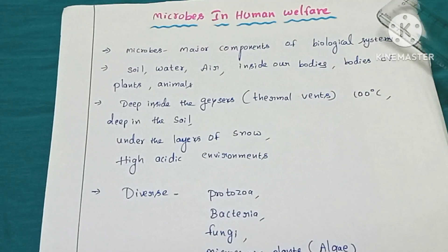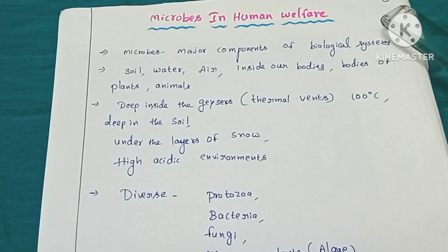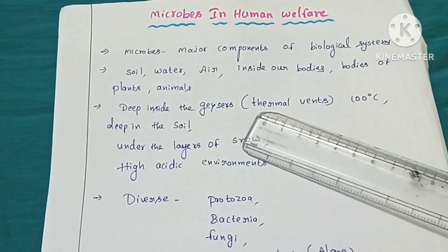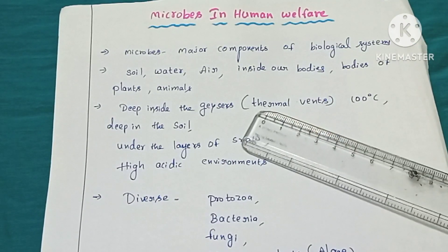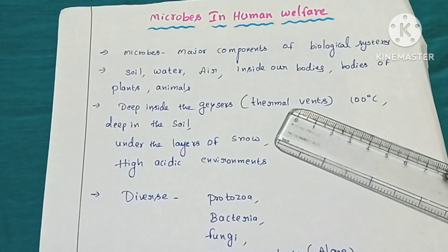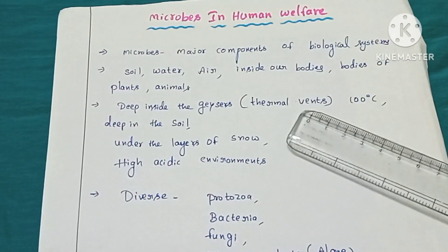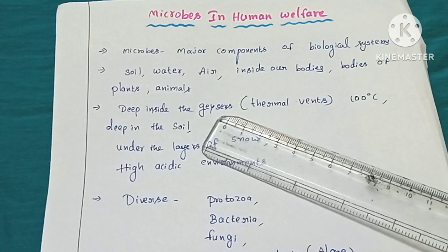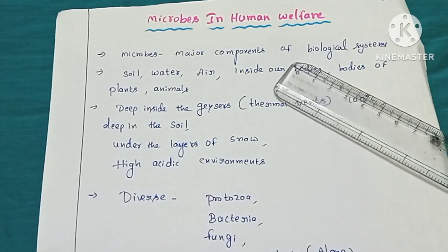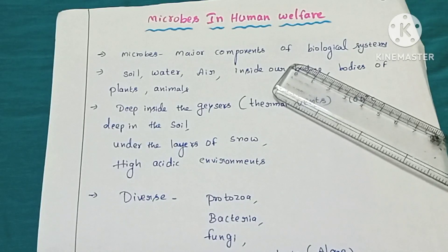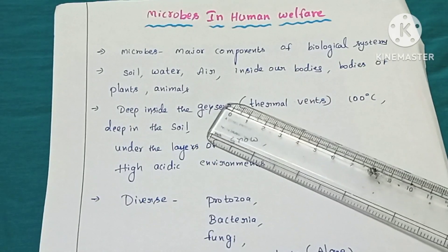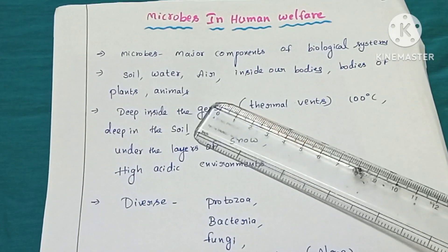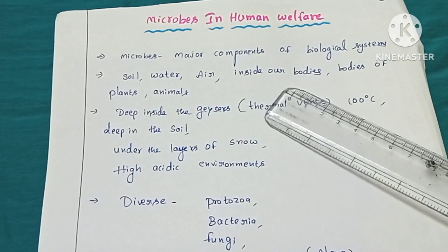Hello everyone, this is Lata Akula. In this video we are going to study about microbes in human welfare from Class 12 NCERT biology. Microorganisms are the smallest living creatures which cannot be seen with the naked eye and can only be seen with a microscope. They are major components of the biological system and may be present in soil, water, air, and inside and outside the body of human beings.